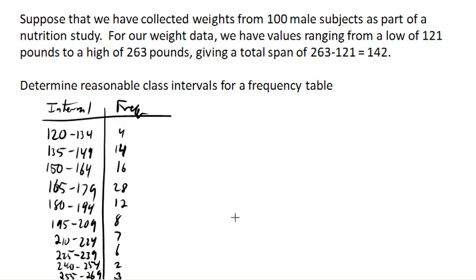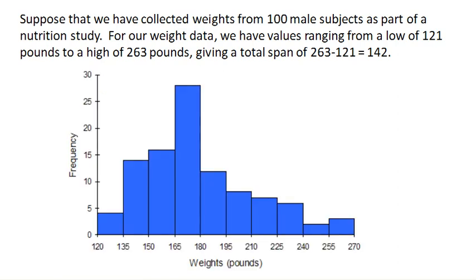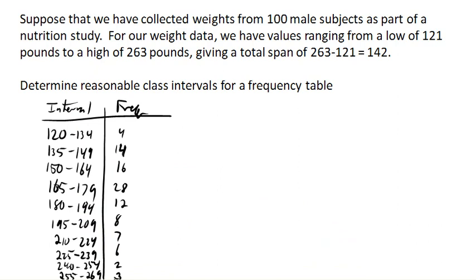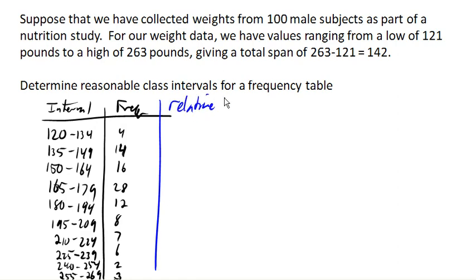If we have a set of class intervals and frequencies like we had for our weight data, one option for representing that was the histogram that we created. Another option would be to create a pie chart. We could do that by calculating out relative frequencies, which would be percentages — we'd add our total number of frequencies and divide each by that to find a corresponding percentage, and then use that to create a pie chart.